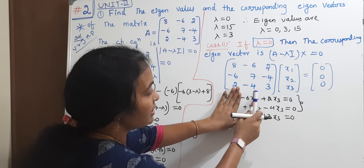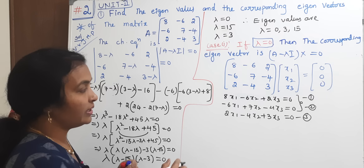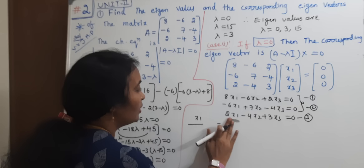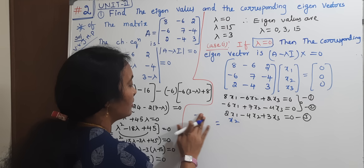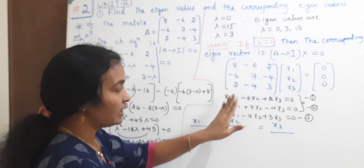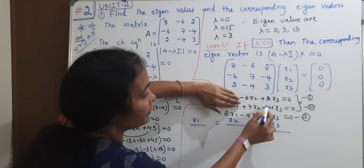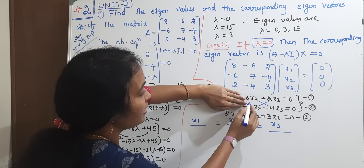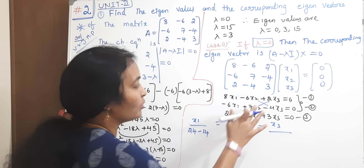Using cross multiplication: for x1, close off x1 variable and cross-multiply the remaining coefficients: (minus 6)(minus 4) minus (2)(7) gives 24 minus 14 equals 10. For x2, close off x2 and cross-multiply: (8)(minus 4) minus (2)(minus 6) gives minus 32 plus 12 equals minus 20. For x3, close off x3 and cross-multiply: (8)(7) minus (minus 6)(minus 6) gives 56 minus 36 equals 20.